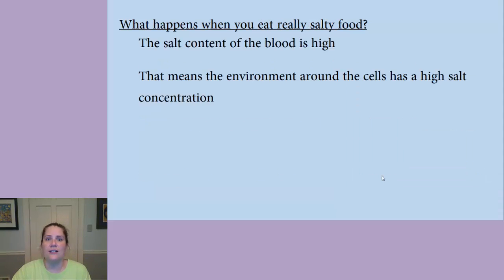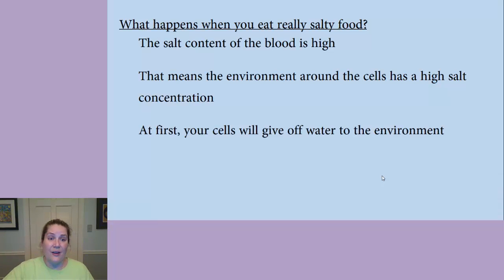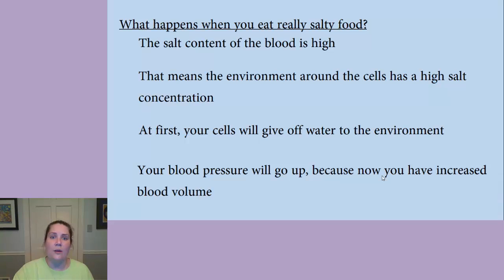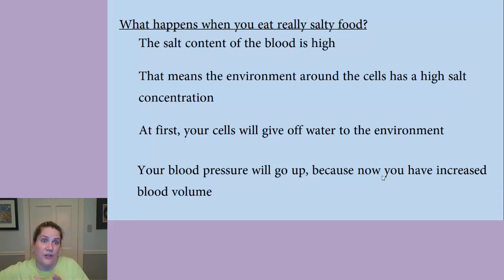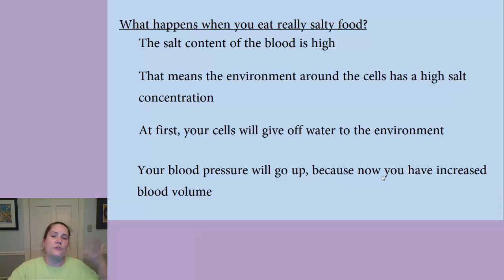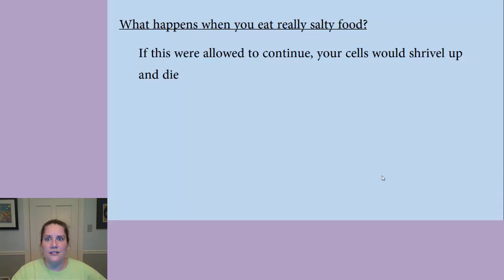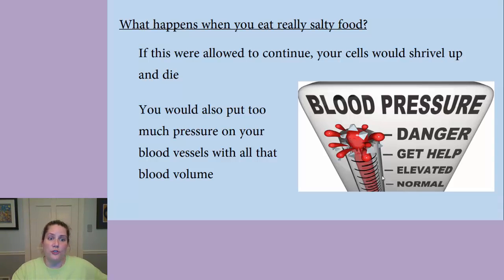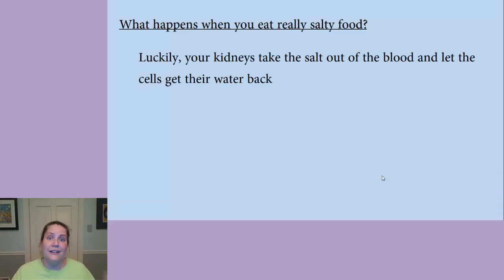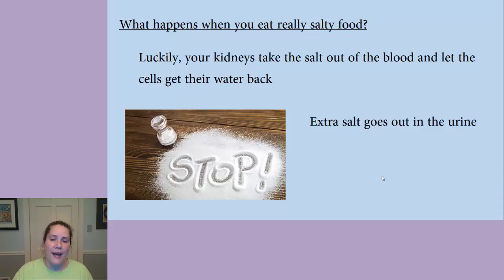What about eating really salty food? The salt content of your blood becomes really high, meaning the environment around your cells has a high salt concentration. Water leaves your cells via osmosis, increasing the blood volume and pushing harder on the arterial walls — raising blood pressure. If allowed to continue, your cells would shrivel up and die and your arteries would wear out. Luckily, your kidneys take the salt out of the blood, let the cells get their water back, and the extra salt goes out in the urine. That's the excretory system.